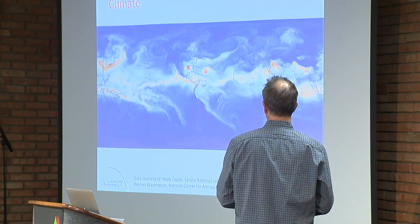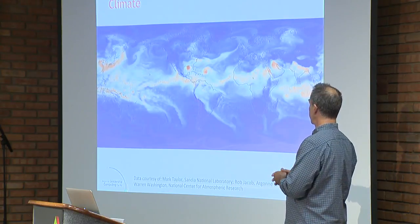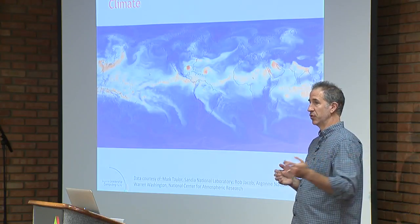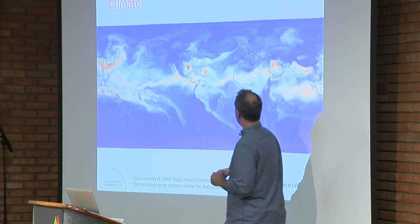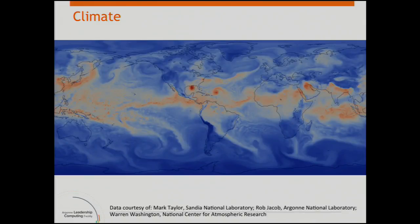They start with observed data, march their simulation forward, and then go back and compare, looking for statistical correlations between what they're computing and what was observed. For example, you can see storms forming. Those don't necessarily match specifically named storms that were observed, but statistically they expect to see the same types of activity at different points during the year. The simulation ran for 27 months of calendar time, simulating on an hourly basis, so they could compare back with observed data to see if they were getting the same types of phenomena.